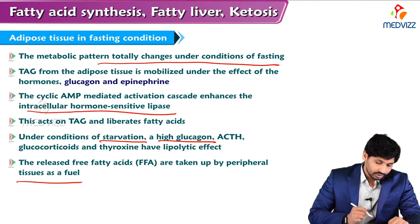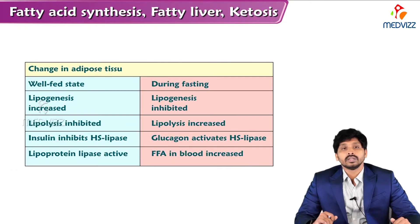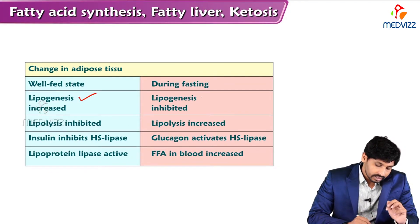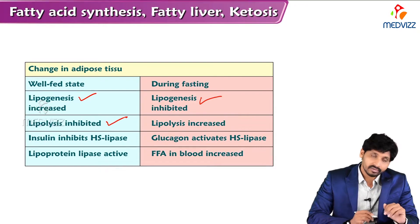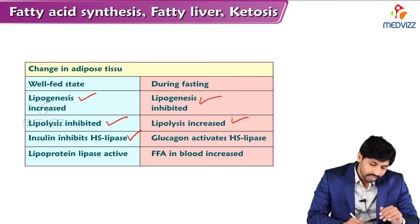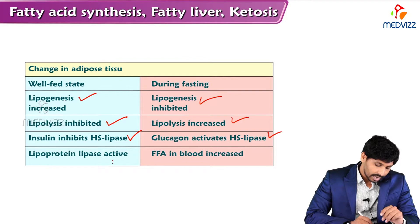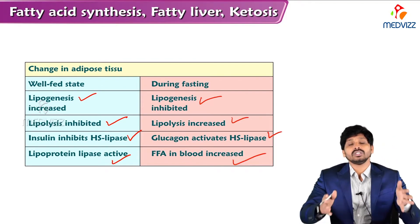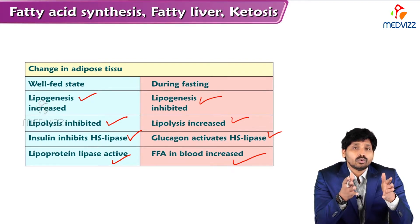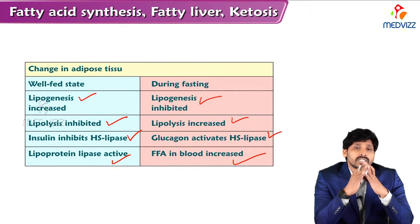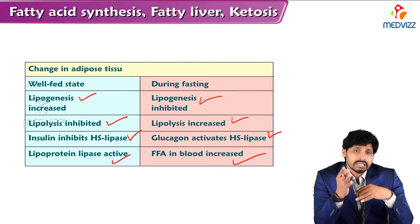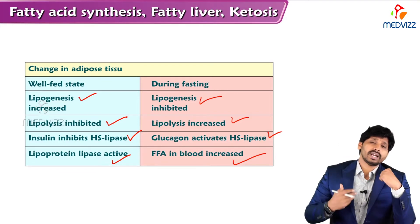The released fatty acids are taken up by peripheral tissues as fuel and undergo beta-oxidation. In summary, the changes in adipose tissue: in well-fed state, lipogenesis is increased and lipolysis is inhibited; in fasting, lipogenesis is inhibited and lipolysis is increased. Insulin inhibits hormone-sensitive lipase; glucagon activates hormone-sensitive lipase. Lipoprotein lipase is active in well-fed state. In fasting, free fatty acids in blood are increased because glucagon mobilizes triacylglycerols into circulation and hormone-sensitive lipase breaks them down to glycerol and free fatty acids.